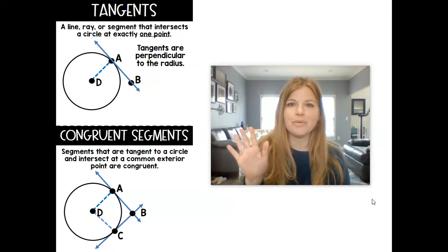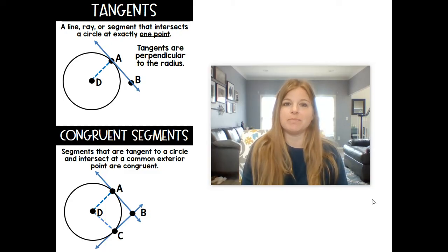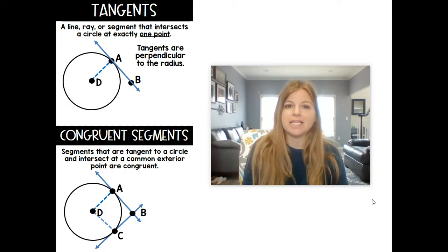Hi, welcome to my video where today we're going to be talking about tangents. A tangent is a line, or segment that intersects a circle at exactly one point. And a tangent is perpendicular to the radius or diameter, whatever you have in your diagram.